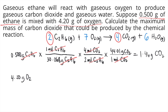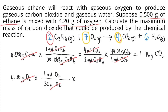Now let's proceed to our second reactant, 4.20 grams of O2. We will do the same process. First, convert grams of O2 into moles of O2 using the molar mass of O2, which is 32 grams per mole, so the grams of O2 cancel. Next, look at the balanced chemical equation: there are 7 O2 and 4 CO2, so 7 moles of O2 produce 4 moles of CO2.